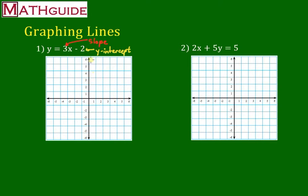That just means that this line crosses the y-axis, and the y-axis is the vertical line. The line is going to cross at negative 2. So on the y-axis, I go down to negative 2, and I put a dot.